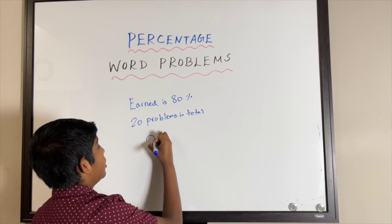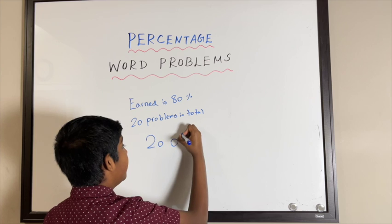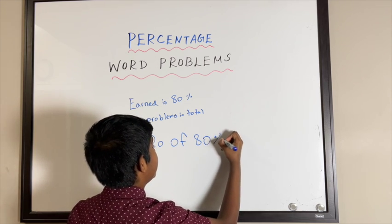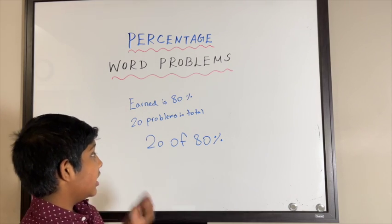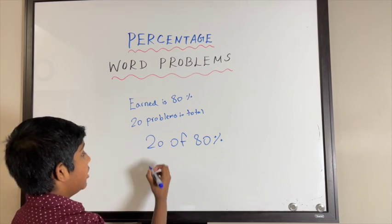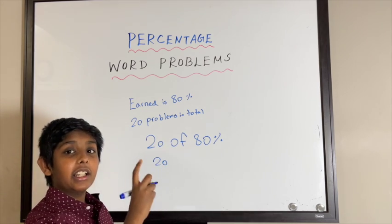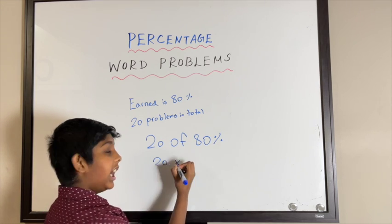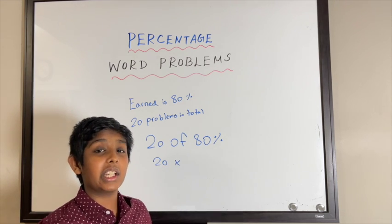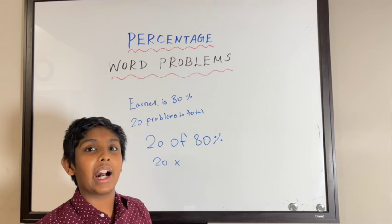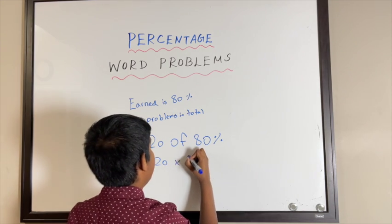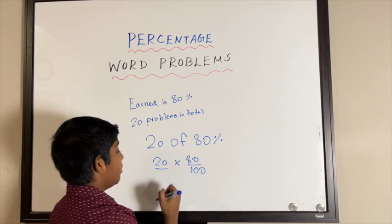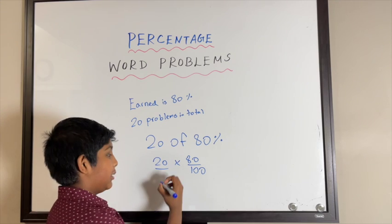What we do is 20 questions of 80 percent. That's how we write it. So 20, and 'of' means multiplication, so 20 times 80 percent. We can write that as 80 over 100.